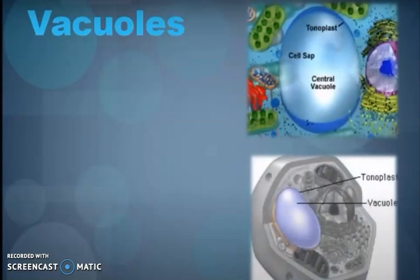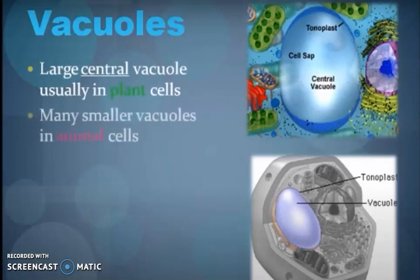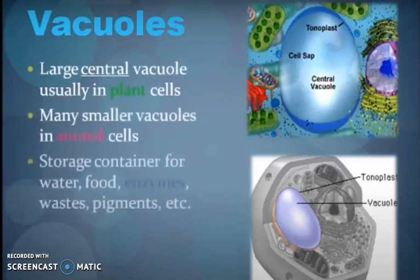Vacuoles are called the storeroom of the cell. Plant cells have large vacuoles, while many smaller vacuoles are found in animal cells. They store water, food, and enzymes.